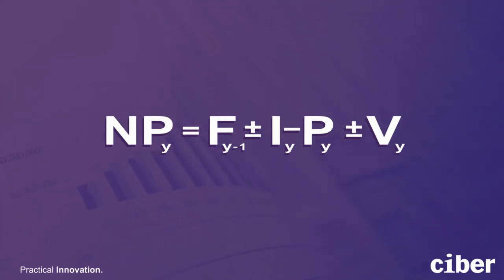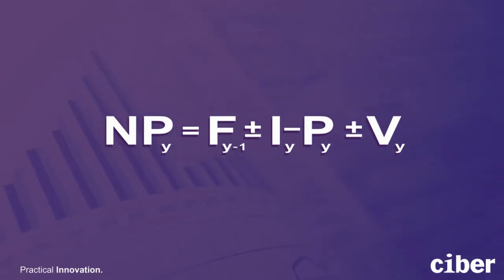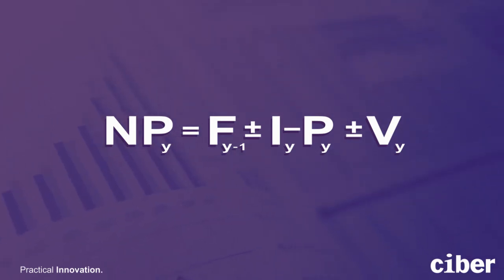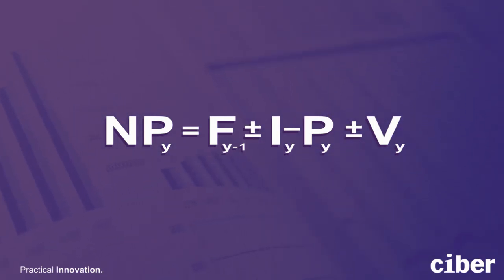less the productivity improvement impacts (P), plus or minus the impacts of changes in volume (V). The three key vectors — inflation, productivity and volume — are common across all areas, be it sales, fixed assets, capex or overhead planning.